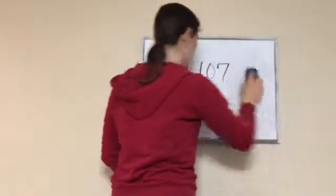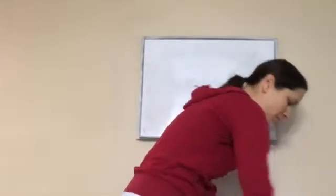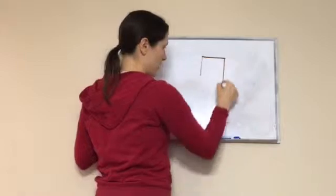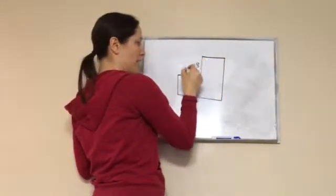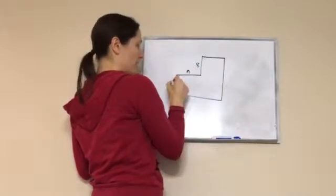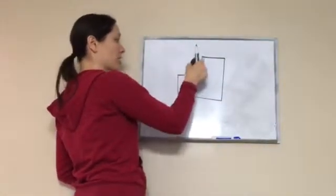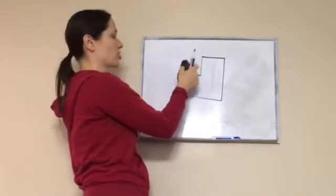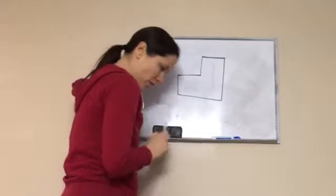Okay, sixth grade lesson 107 — this is on area of complex shapes. Do you remember last week when we took two shapes and we'd have an amount here but then we wouldn't know this? That's kind of what we're going to be learning today. You're going to learn how to find the area of what's on the inside, not just knowing what's on the outside. Here's an example.